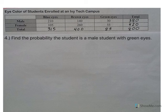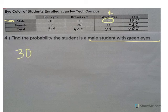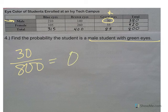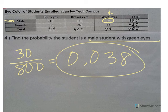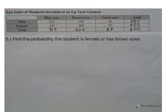Number four: find the probability that a student is male with green eyes. Male with green eyes — there are 30 of them out of 800, and that is 0.038 rounded to three decimal places. A very small percentage of students are male with green eyes.